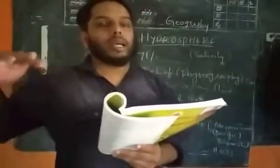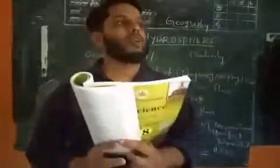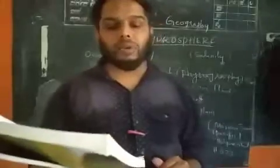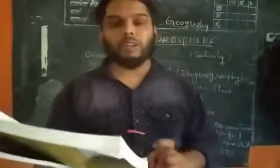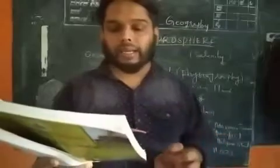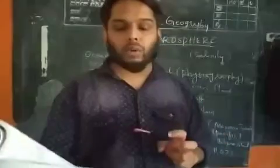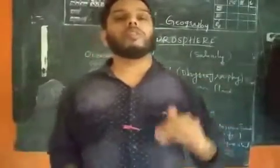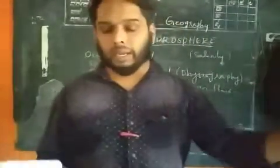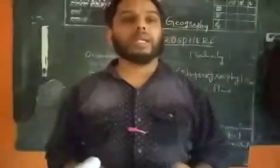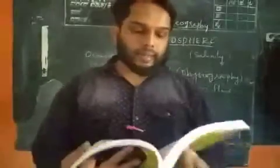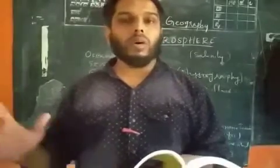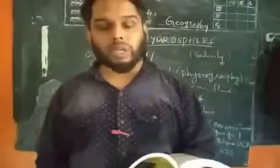Now we study ocean currents. 'Current' means flow - for example, we use the word current for electricity as well. Ocean water has three types of movements: waves, currents, and tides. Ocean currents are the regular movement of ocean water from one region to another in a specific route. There are two types: warm currents and cold currents.